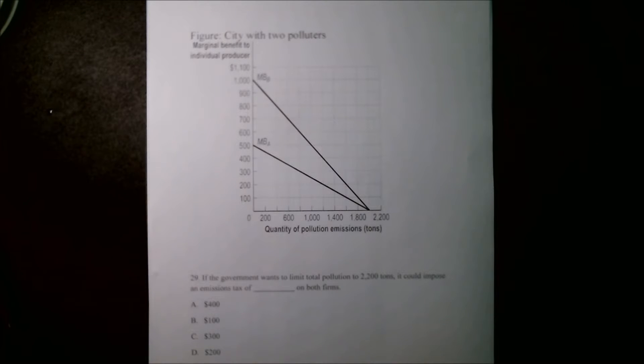This question asks us if the government wants to limit total pollution to 2,200 tons, it could impose an emissions tax of blank on both firms. Our options are A, $400, B, $100, C, $300, and D, $200.